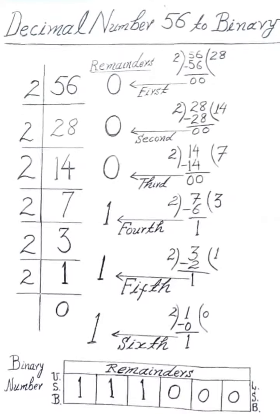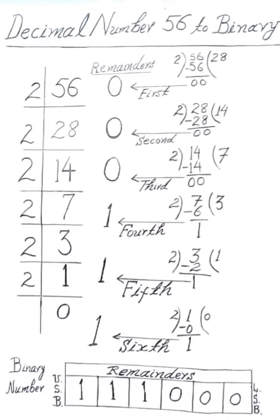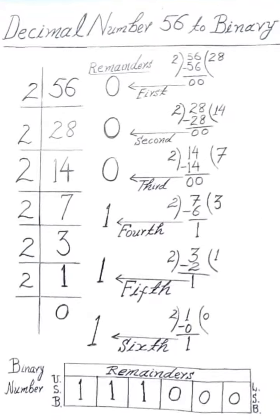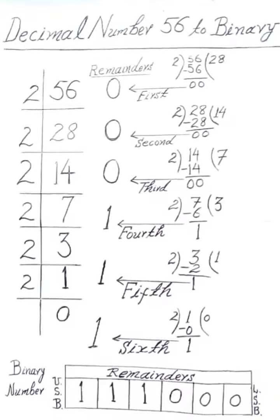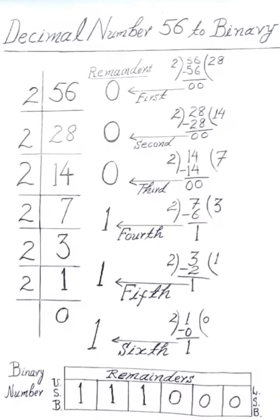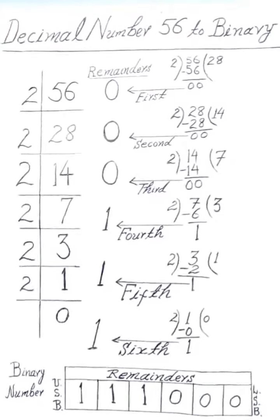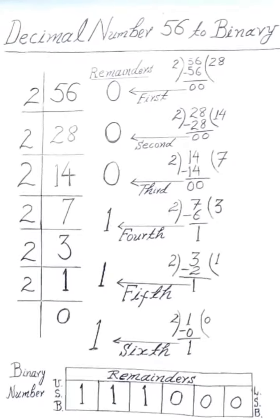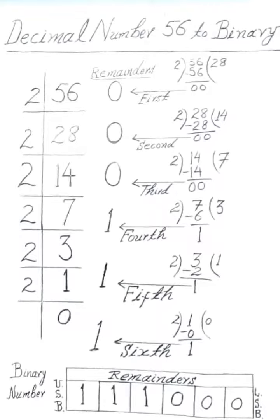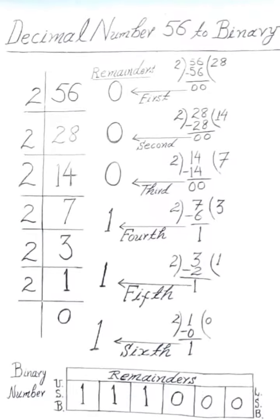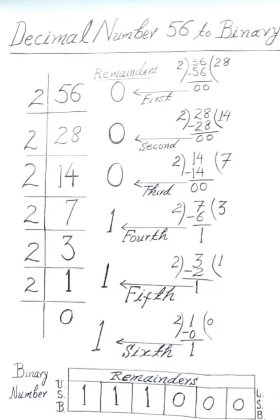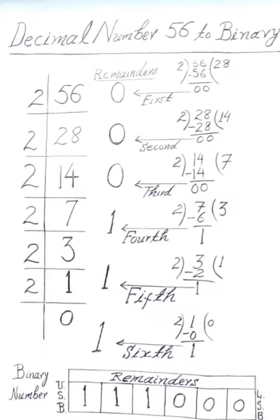The remainder 0 from 28÷2 is the second remainder. Then we divide 14 by 2 and the remainder 0 is the third remainder. Again, we divide 7 by 2 and the remainder 1 is the fourth remainder.